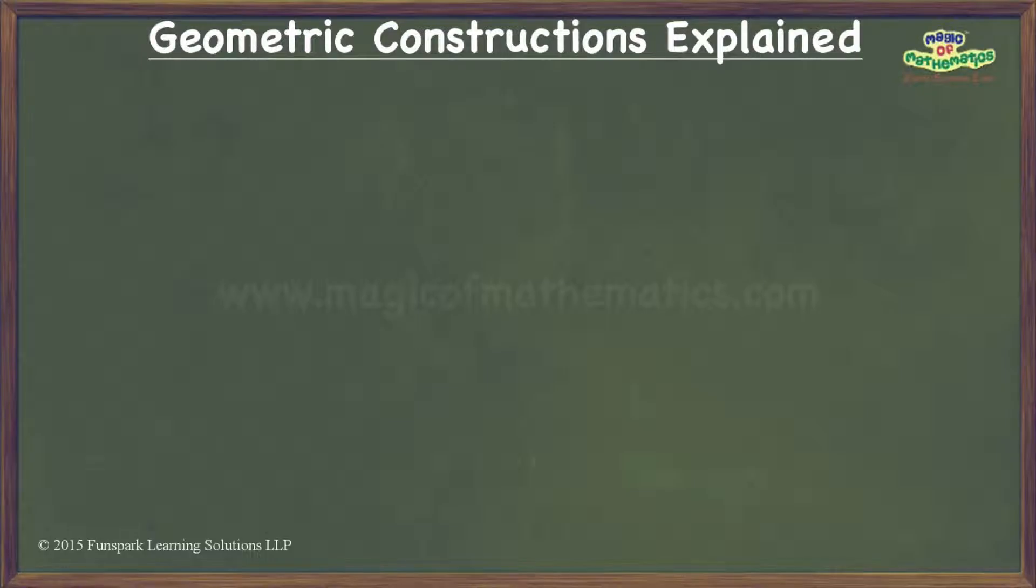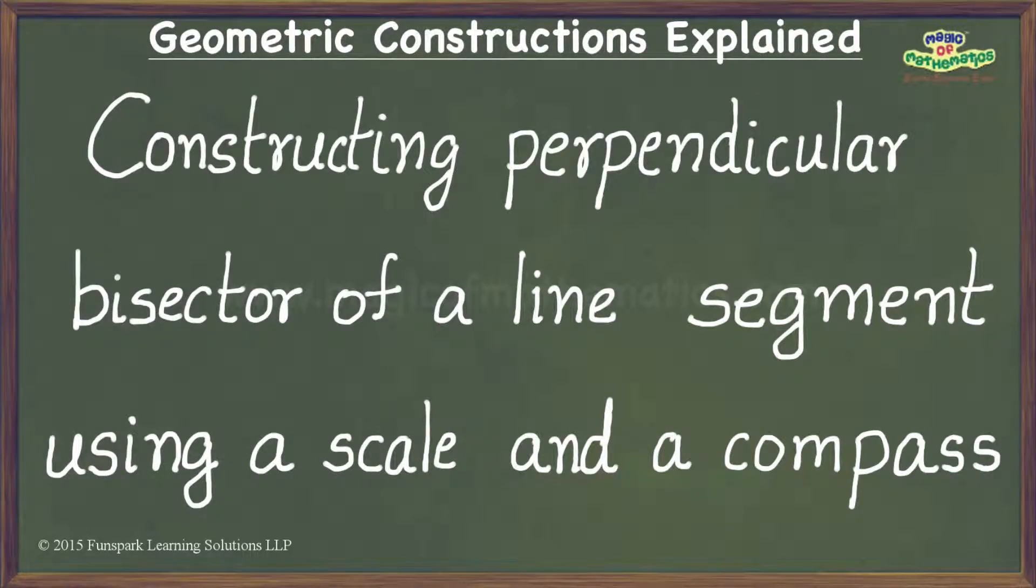In this video I intend to arrive at a method for constructing the perpendicular bisector of a line segment using a scale and a geometric compass. For this I will use the fact that the diagonals of a rhombus bisect each other at right angles.